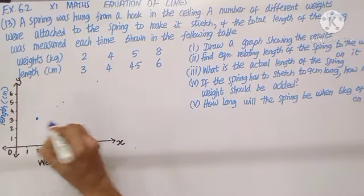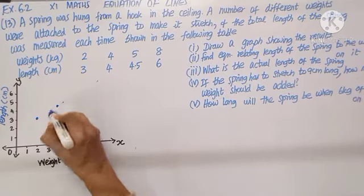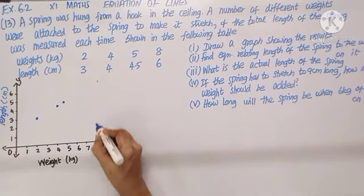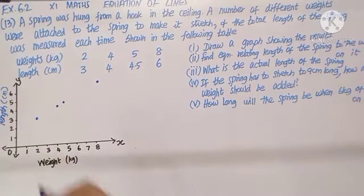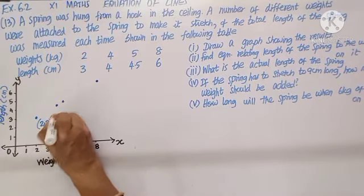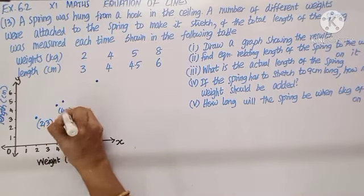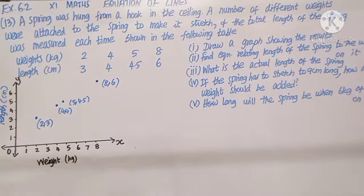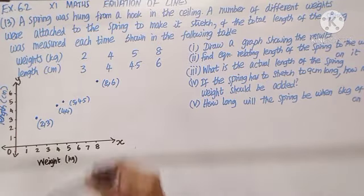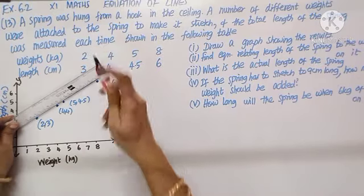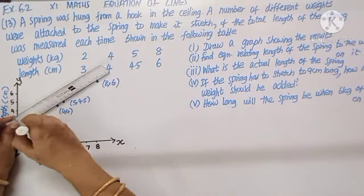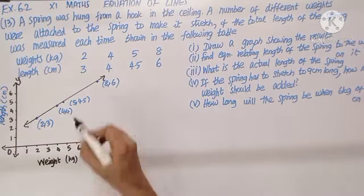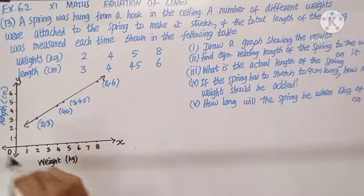We plot the points: (2, 3), (4, 4), (5, 4.5), and (8, 6). After marking these points, join them using a scale. This represents the relationship between weights and lengths. The first part of the question is complete.